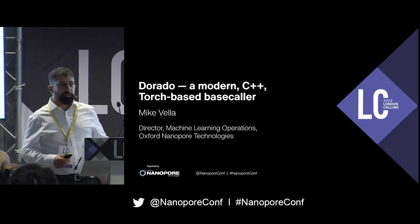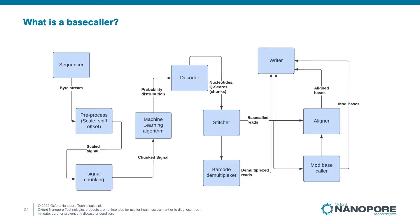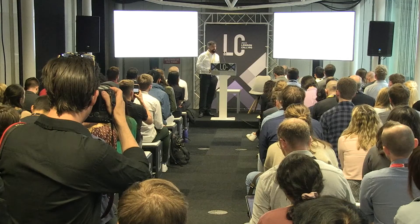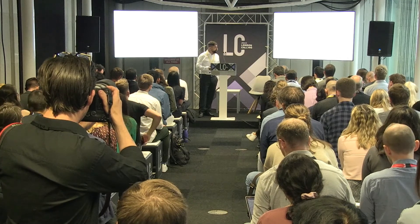I'm going to be talking about Dorado. Dorado is a C++-based, LibTorch-based base caller that we are currently working on. We've released a preview version on GitHub, which I'll be talking about later.